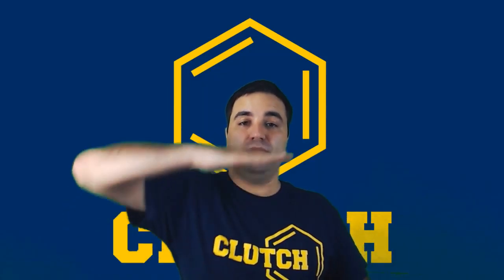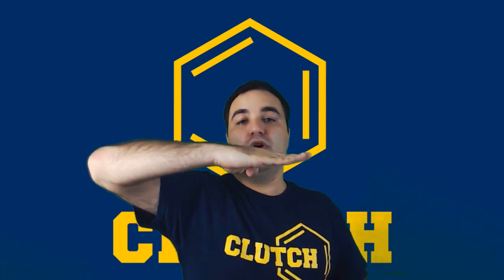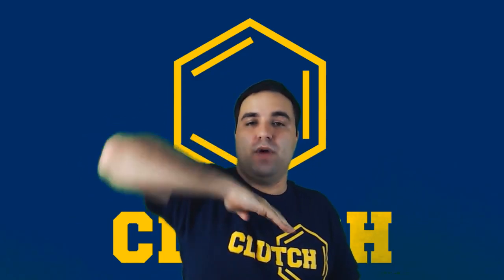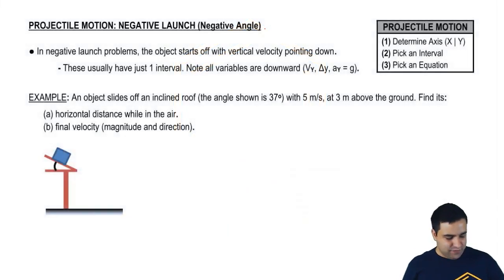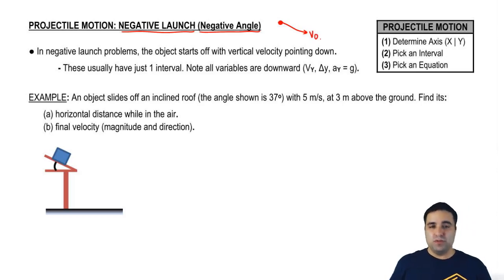Hey guys, we're now going to talk about a type of projectile motion where you throw something in a direction that is below the horizontal, so sort of down this way. I call this negative launch because it has an initial angle that is negative. So if you throw something down this way, this is your initial velocity.